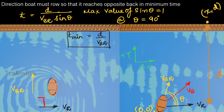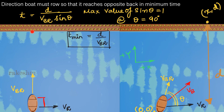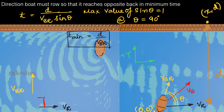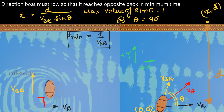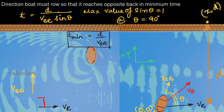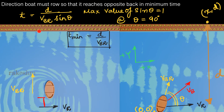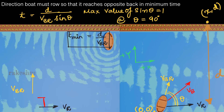Also note that although you are pointing your boat directly toward the opposite bank, you are not reaching exactly straight across. In a moving river, pointing your boat toward a destination does not guarantee you reach that exact point. The next part is: during this minimum time, what is the drift of the boat — that is, what is the horizontal displacement during this minimum time?